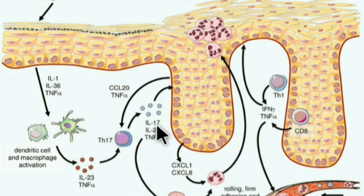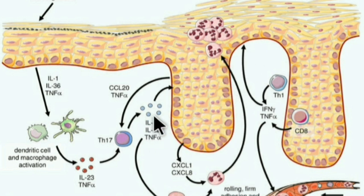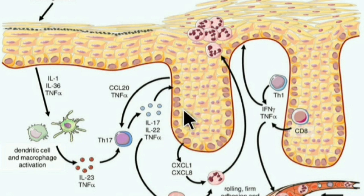Th17 cells also secrete interleukin-22, which causes epidermal acanthosis and abnormal keratinocyte differentiation. Interleukin-17A and F make keratinocytes secrete more antimicrobial peptides such as beta-defensin and cathelicidins. Beta-defensins increase the intensity of the inflammatory response to minor stimuli.